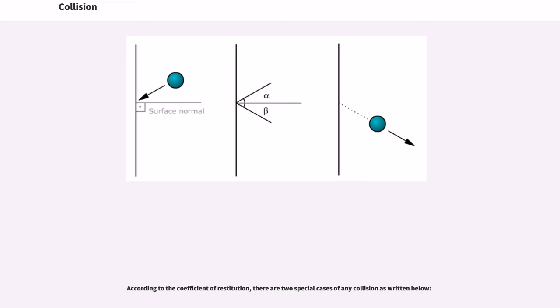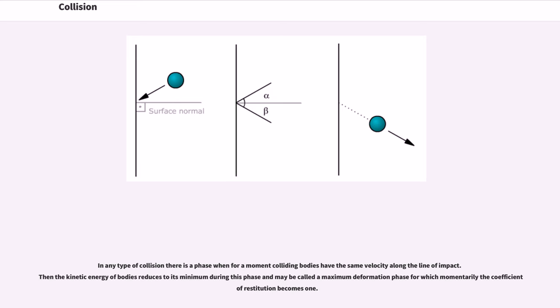According to the coefficient of restitution, there are two special cases of any collision. In any type of collision there is a phase when for a moment colliding bodies have the same velocity along the line of impact. Then the kinetic energy of bodies reduces to its minimum during this phase and may be called a maximum deformation phase for which momentarily the coefficient of restitution becomes 1.